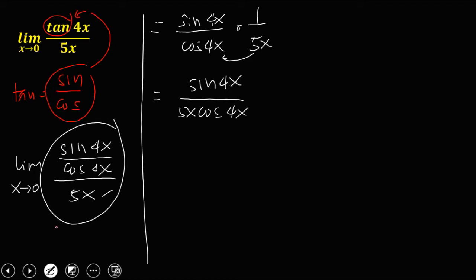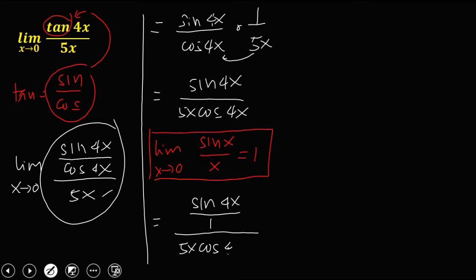Now since we can solve this limit using this theorem that the limit of sine x over x as x approaches 0 is equal to 1, using this theorem we can rewrite this limit. So we have sine 4x over 1 over 5x then cosine 4x. Now observe on this theorem that the angle and the denominator must be the same.